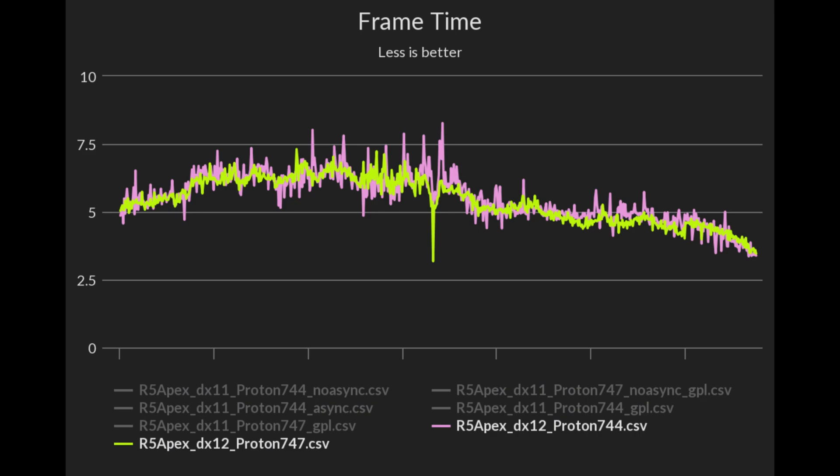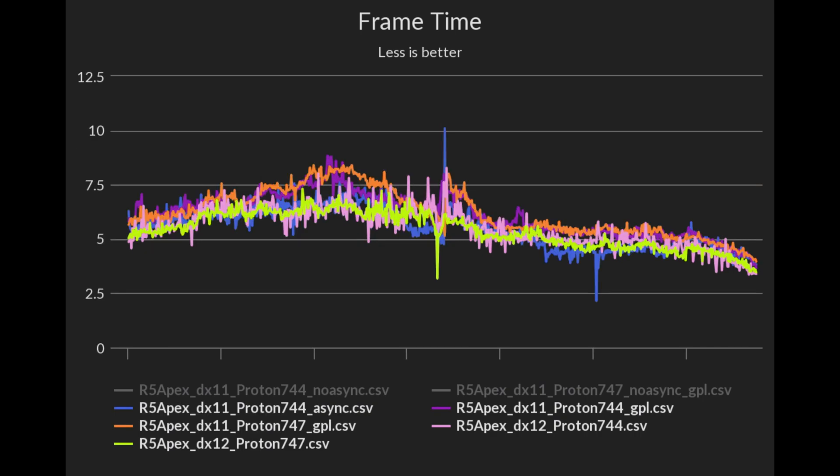Moving on to DX12, we can see that similarly to the FPS benchmarks, Proton 747 looks more stable for the most part than 744. And if we compare async and GPL to DX12, DX12 is more stable, and as previously seen, async is beating GPL in frame times as well.